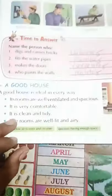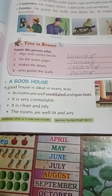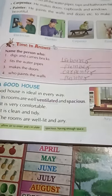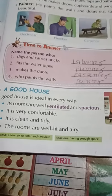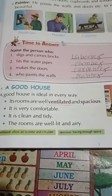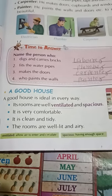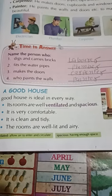A good house is ideal in every way. Its rooms are well ventilated and spacious — ventilated means hawa aur ujaas wale, jahan pe hawa ka circulation achhe se ho, and spacious means enough space for people. It is very comfortable, clean and tidy. The rooms are well lit and airy — matlab inme hawa aur ujaas achhe se aati hai.